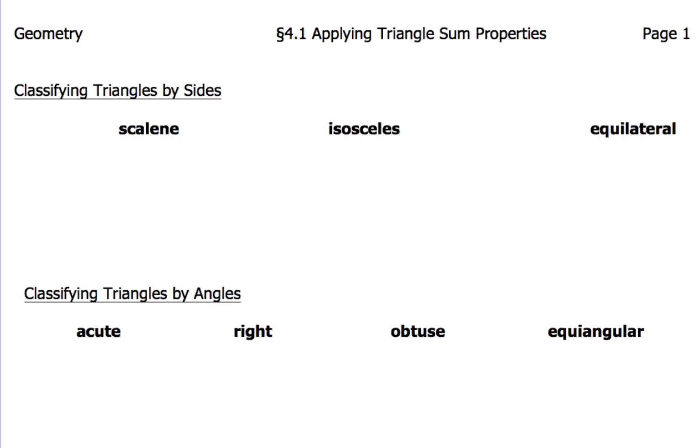Now when we first start talking about triangles, we're going to have to classify them. Now there's two ways to classify triangles. One is by their sides, and the other is by their angles. Now there are three ways to classify them by their sides, and four ways to classify triangles by their angles.